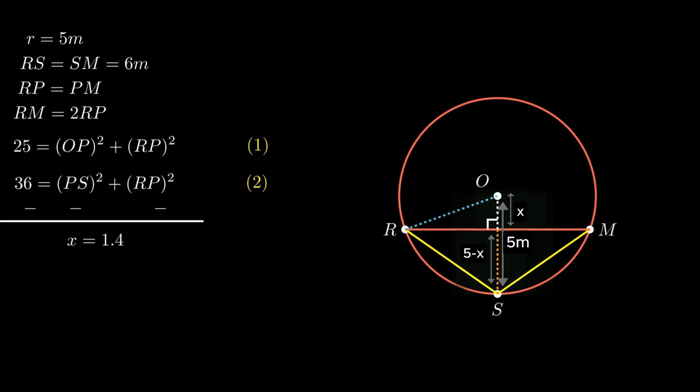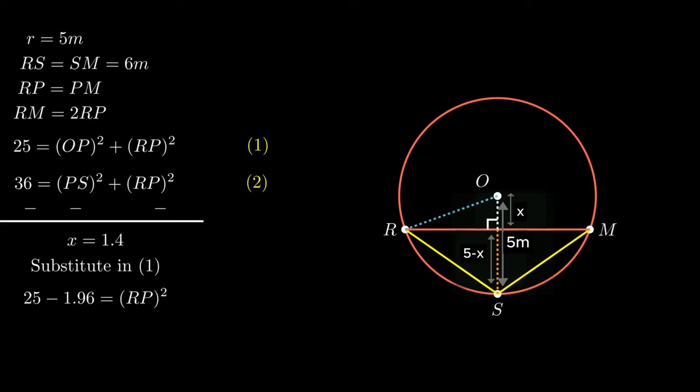Transposing constant terms, we get 10x = 25 − 11 = 14, so x = 1.4. Since we need to find segment RP and not OP, we substitute x = 1.4 into Equation 1: 25 = (1.4)² + RP². Since (1.4)² = 1.96, this becomes 25 − 1.96 = RP², giving RP² = 23.04.